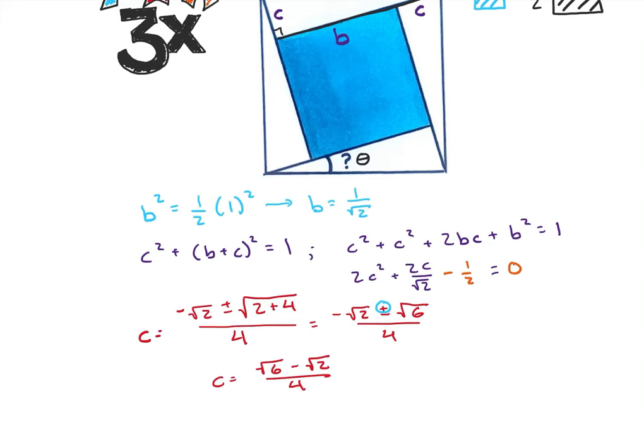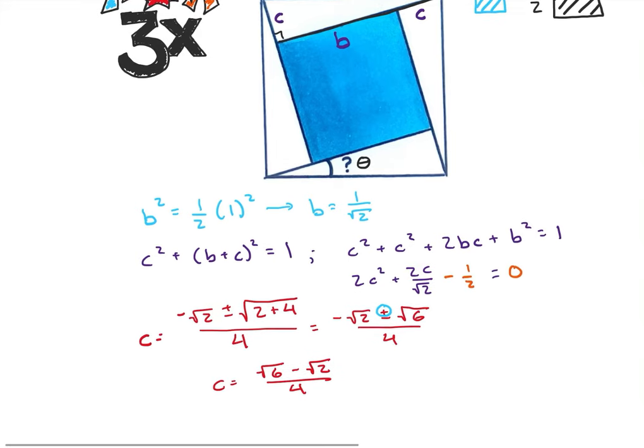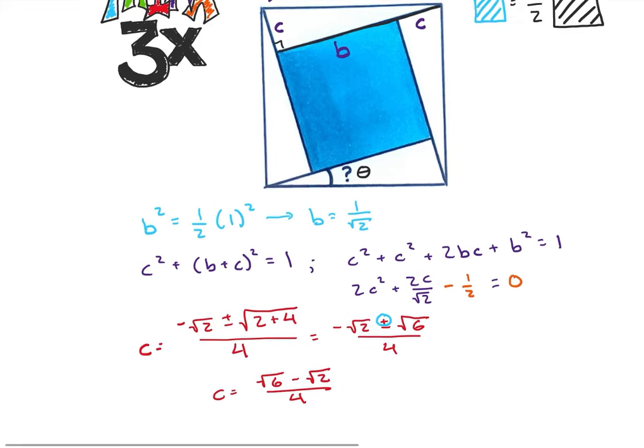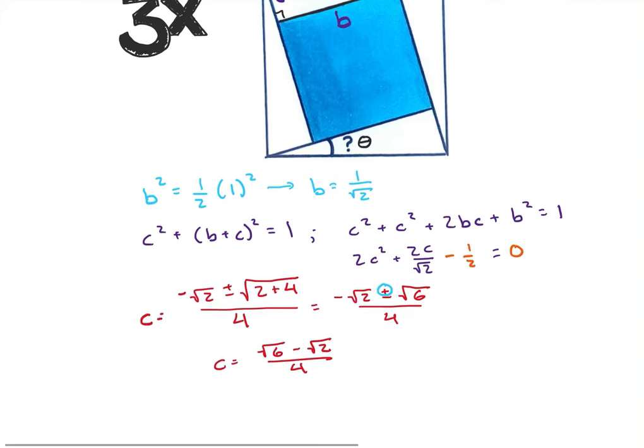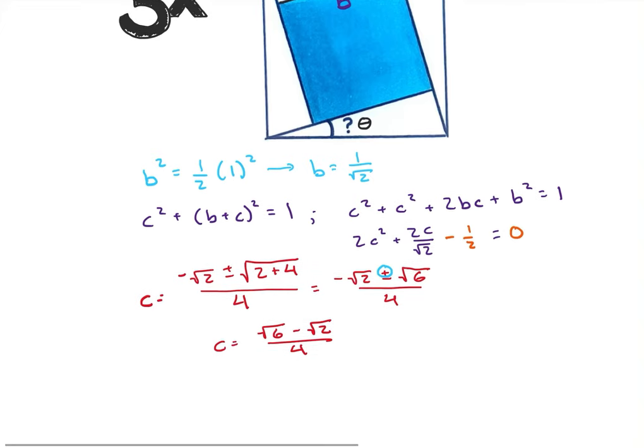All right, so we're looking pretty good at this point. I have my length of C and I have my length of B. So now I can take either the arc tangent, the arc sine or the arc cosine to get the angle here.